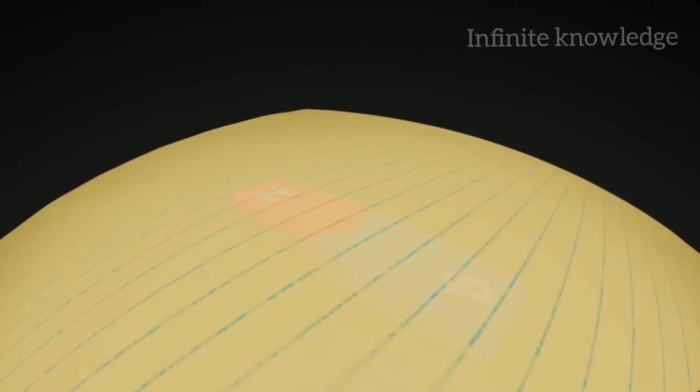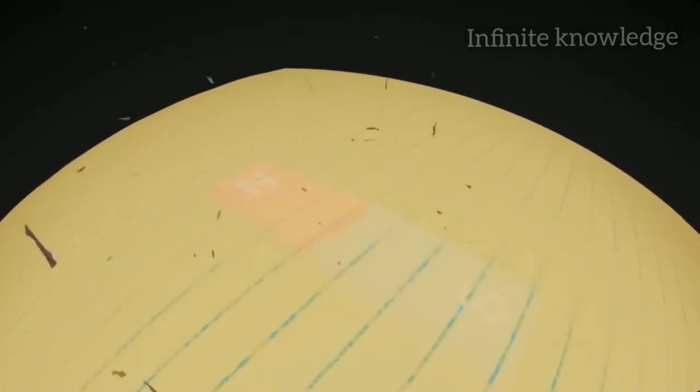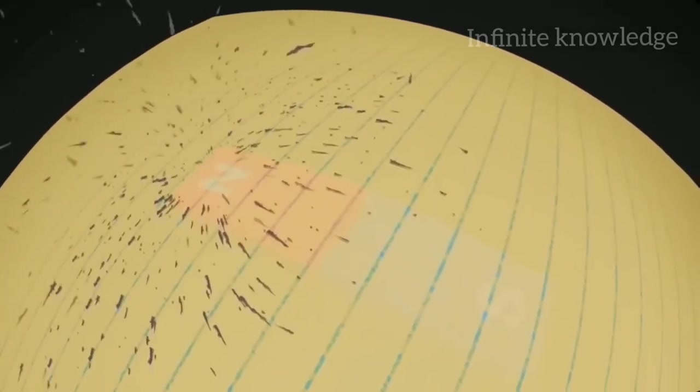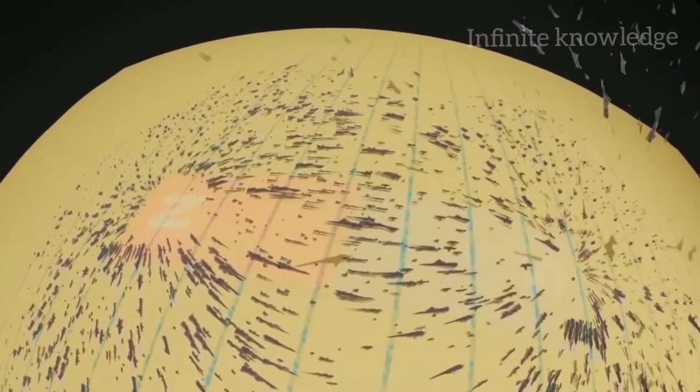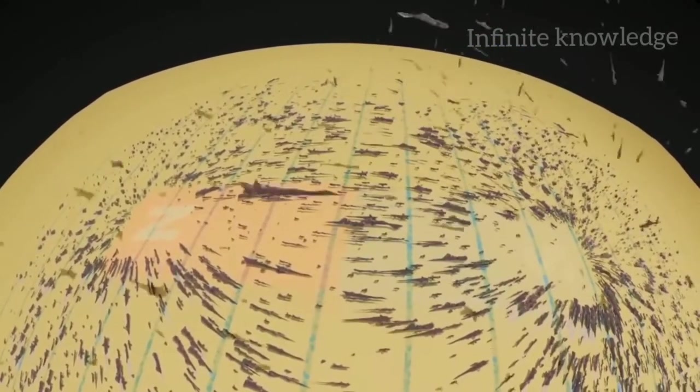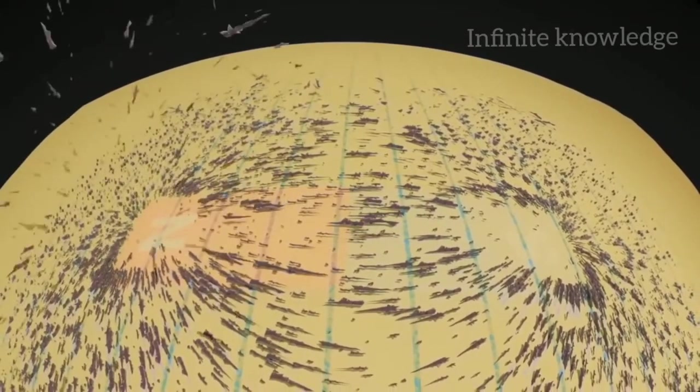We can see a bar magnet's magnetic field by dropping iron filings on a piece of paper above the magnet. The filings line up with the direction of the magnetic force. Earth's magnetic field has these same lines of force connecting its north and south poles.